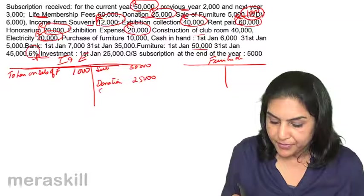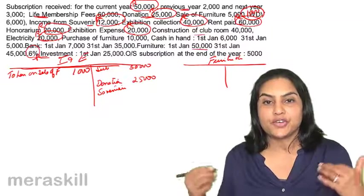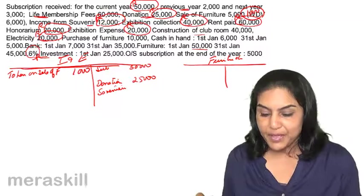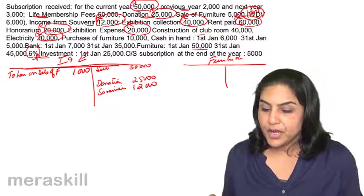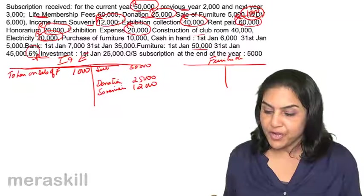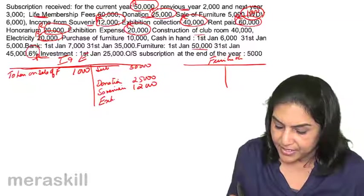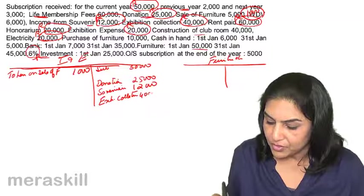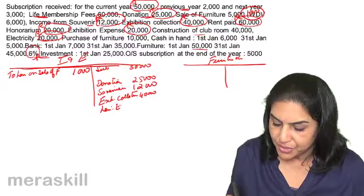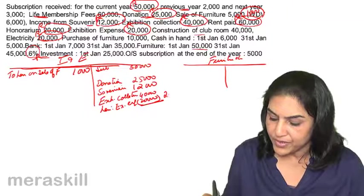Income from souvenir — souvenir is like a magazine which has been published in which advertisements are placed by different people — income is 12,000. Exhibition collection is 40,000 and there was an expense of 20,000. So on the income side: exhibition collection 40,000 less exhibition expense 20,000, giving us a net return of 20,000.